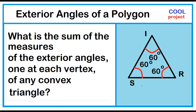Each angle in this triangle measures 60 degrees. The three sides are segment SI, segment IR, and segment SR. Let's extend the sides of this triangle to form exactly one exterior angle at each vertex.